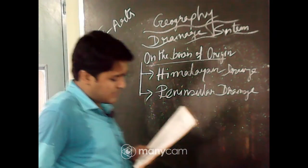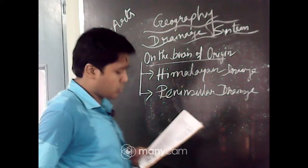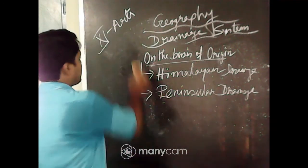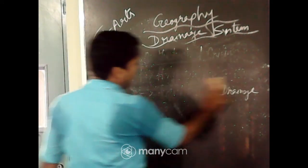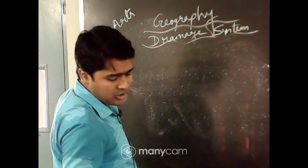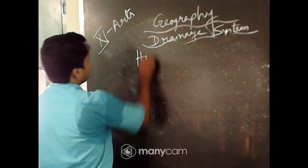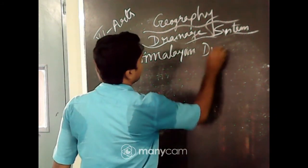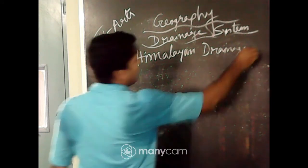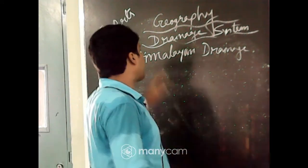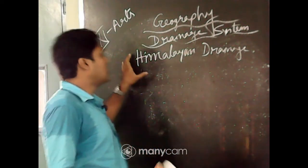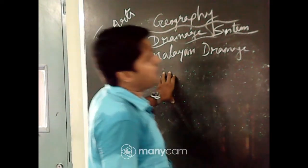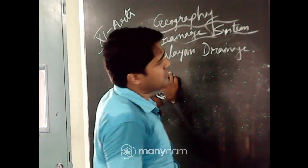Although it has the problem of including rivers like Chambal, Betwa and Son, which are much older in origin than other rivers that have their origin in the Himalayas, it is the most accepted basis of classification — hence it has been followed in this book. Now, on the basis of origin, the first one is Himalayan drainage. Anyone can type here if you know what rivers originate from the Himalayan mountain range.